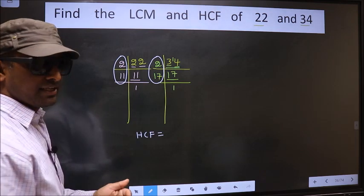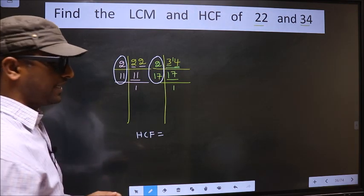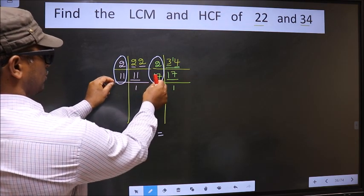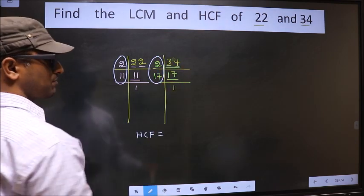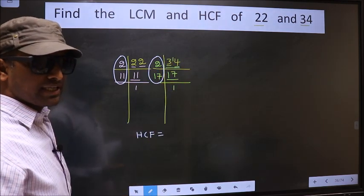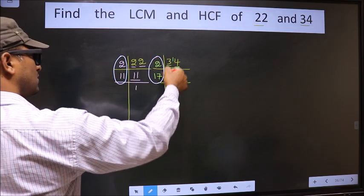I repeat, HCF is the product of numbers which should be present in these two places, that is here and also here. So now let us find the numbers which are present here and also here.